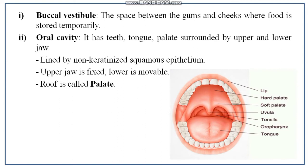The first part of the buccal cavity is the buccal vestibule — the space between the gums and cheeks where food is stored temporarily. The oral cavity is the inner and central part, surrounded by the upper and lower jaw, containing teeth, tongue, and palate. It is lined by non-keratinized squamous epithelium. The upper jaw is fixed and the lower jaw is movable. The roof of the oral cavity is known as the palate.